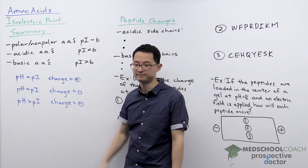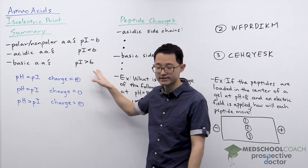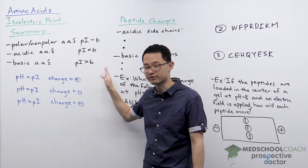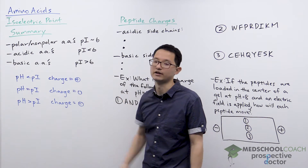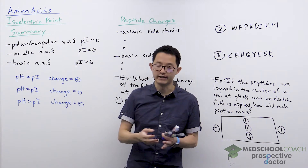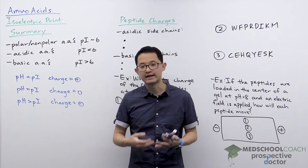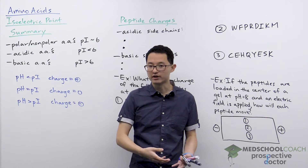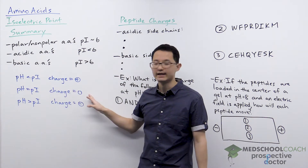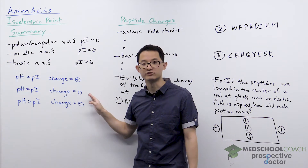The isoelectric point is the pH at which you have 100% zwitterion — all of your molecules in solution are in their zwitterion form. And since the zwitterion has no net charge, if the pH is equal to the pI, then the charge is going to be equal to zero.